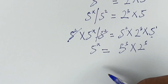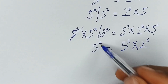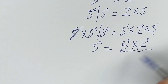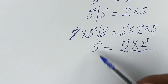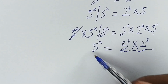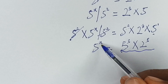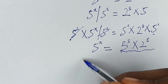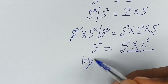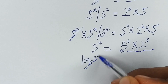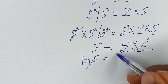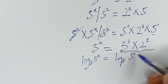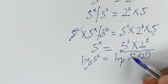Now from here we can see that we have 5 raised to the power x on the left side, and on the right side we have 5 raised to the power 3 times 2 raised to the power 3. So we have to take the logarithm to the base of whatever is carrying x. So we take the logarithm to the base of 5 — log base 5 of 5 raised to the power x on both sides. So we have log base 5 of 5 raised to the power 3 times 2 raised to the power 3.